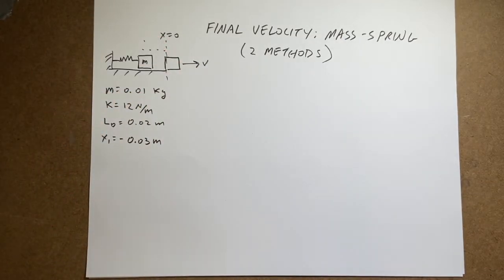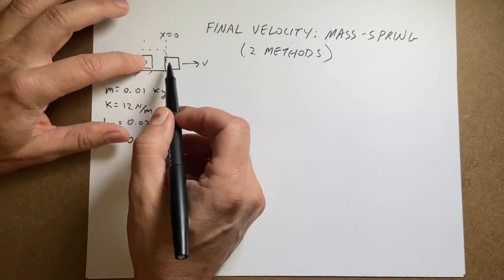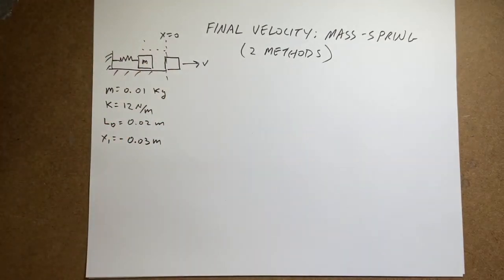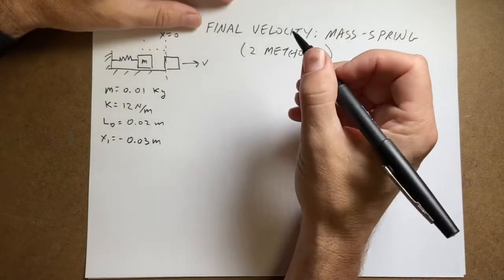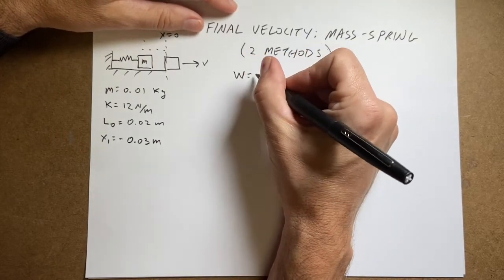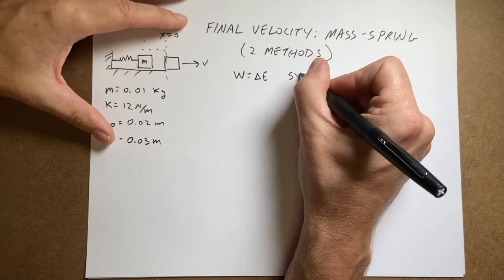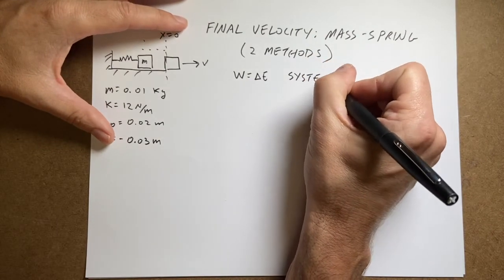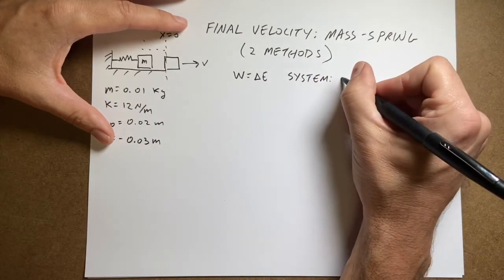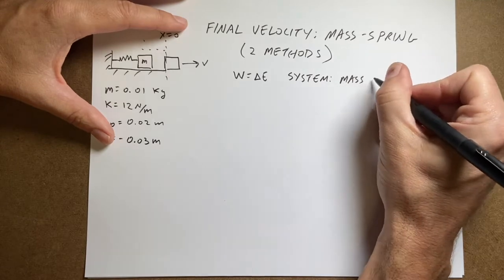So the first way you should think about this problem is to say, look, I have a position and a position and I don't really care about when it happens. I just care about the speed. And if I just care about the positions and speed, that should trigger in your mind to say, hey, I'm going to use work energy. So here's the work energy principle. It says work is a change in energy. And now once I write that down, the next thing I need to do is say, what is my system? So my system in this case is going to be equal to the mass plus the spring.